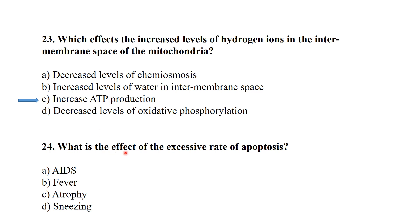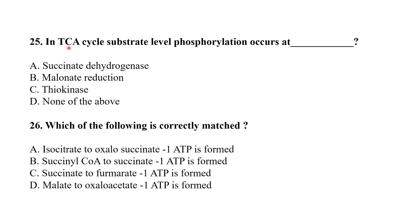What is the effect of increased levels of hydrogen ions in the intermembrane space of the mitochondria? It results in increased ATP production. What is the effect of an excessive rate of apoptosis? It results in atrophy. In the tricarboxylic acid cycle, substrate-level phosphorylation occurs at the thiokinase step.